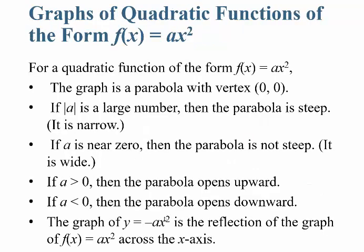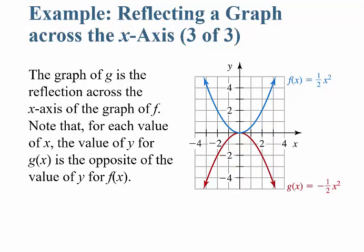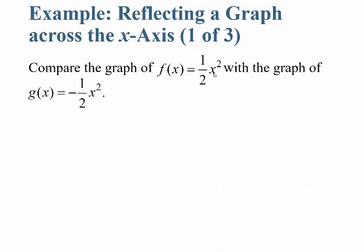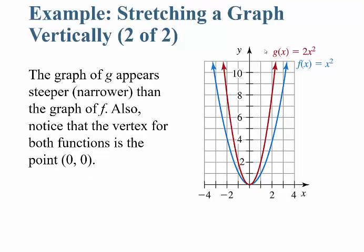For a quadratic function of this form — f of x is equal to a times x squared, like 1 half x squared, negative 1 half x squared, or 2x squared — just a value in front of the x squared.